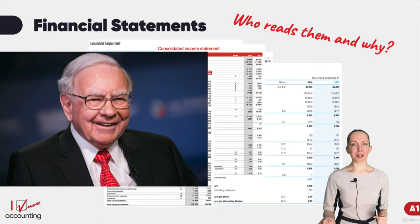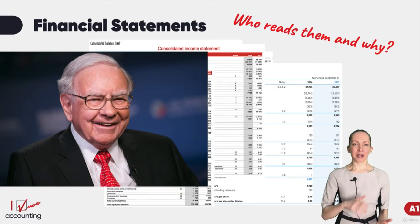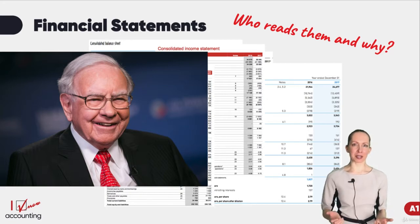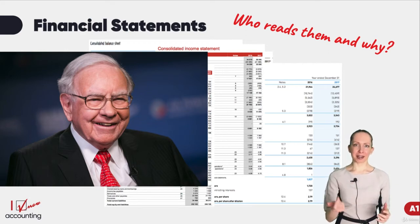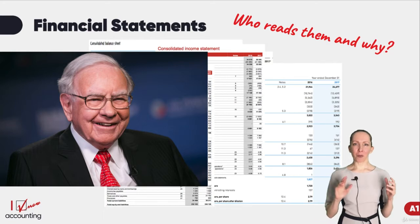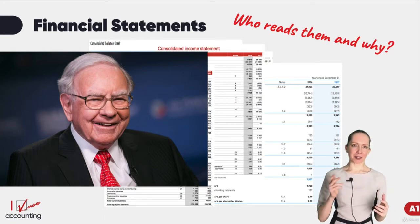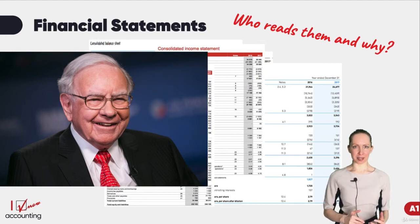Among other things, he is known for — when being asked how to get smart — he was holding a pile of papers which were financial statements, and he said: 'I read 500 pages of this every day and I recommend you to do so too.' So if Warren Buffett can grab his financial wisdom from financial statements, maybe we also can find there something interesting.